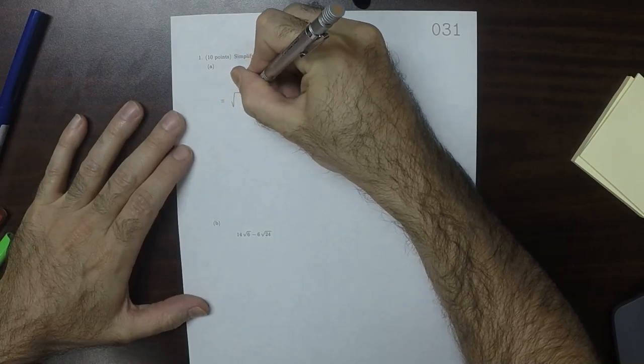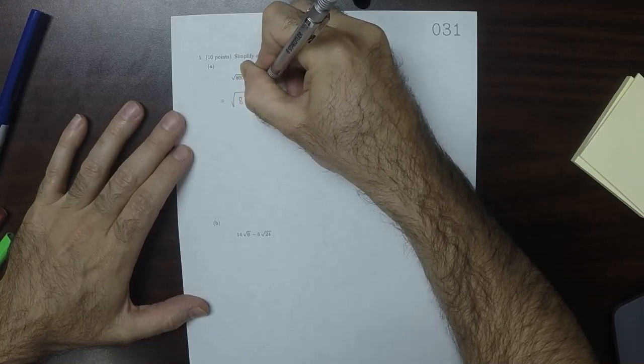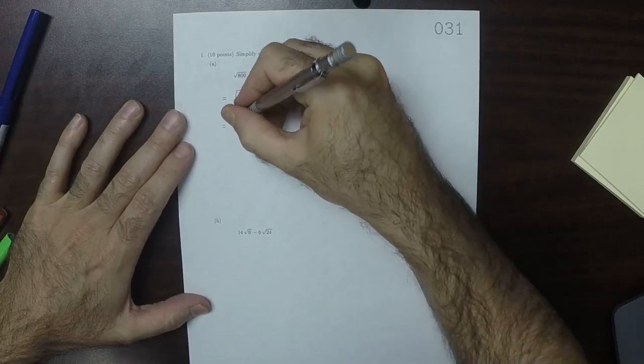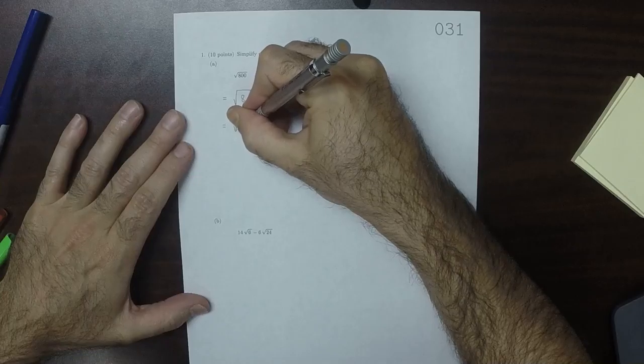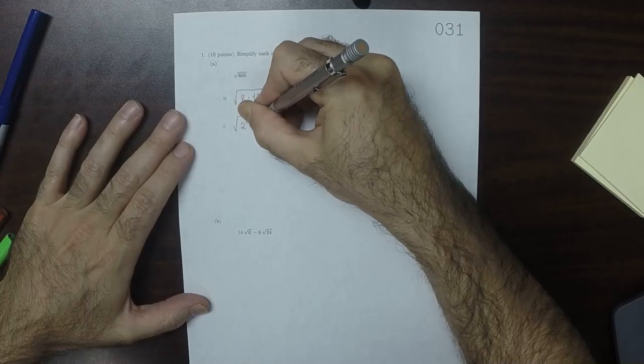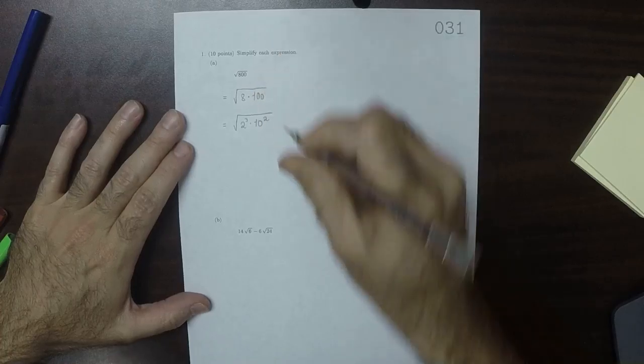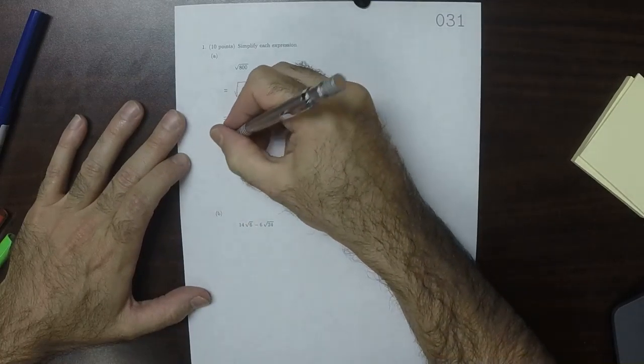So this would be the square root of 8 multiplied by 100, which is 2 cubed multiplied by 10 squared. And since this is square root, we can smuggle things out in pairs.